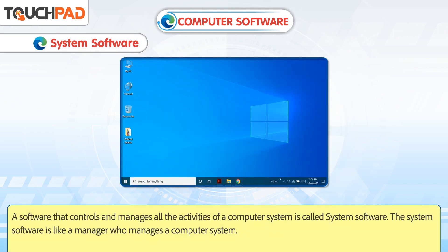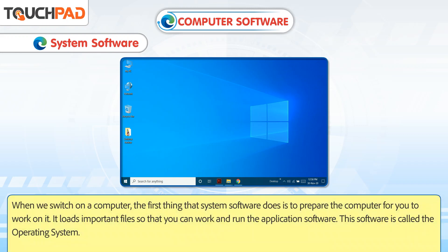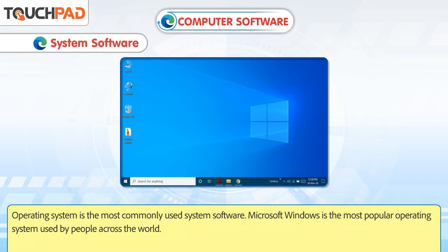System software. A software that controls and manages all the activities of a computer system is called system software. The system software is like a manager who manages a computer system. When we switch on a computer, the first thing that system software does is to prepare the computer for you to work on it. It loads important files so that you can work and run the application software. This software is called the operating system.